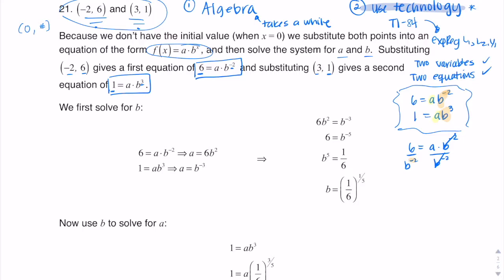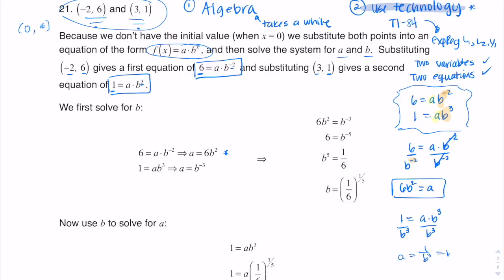I get a equal to six divided by b to the negative two. But remember negative exponents — I call that the traveling exponent. So ultimately I get six b squared on the left side, giving me six b squared equals a. That's one equation where I've solved for a. Now if I take my second equation, one equals a times b cubed, that's easier to solve for a — I just divide by b cubed — and I get a equals one over b cubed, which using negative exponents I can write as b to the negative three.